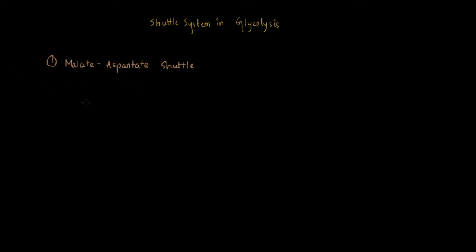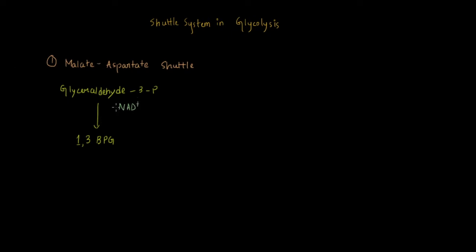In the Malate-Aspartate shuttle, glycolysis has the intermediate glyceraldehyde-3-phosphate. This glyceraldehyde-3-phosphate is converted into 1,3-bisphosphoglycerate (BPG). In the process, NAD+ is reduced to NADH.